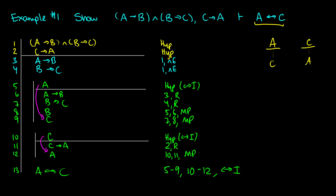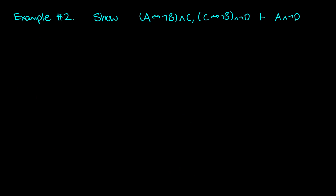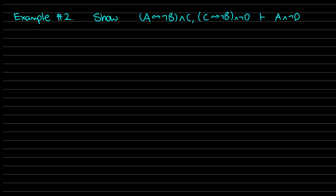So this is the proof that shows that A arrow B and B arrow C, along with C arrow A, gives us A if and only if C. That is example 1. Let's look at example 2 — let's show that A if and only if not B and C, and C if and only if not B and not D, gives us A and not D.